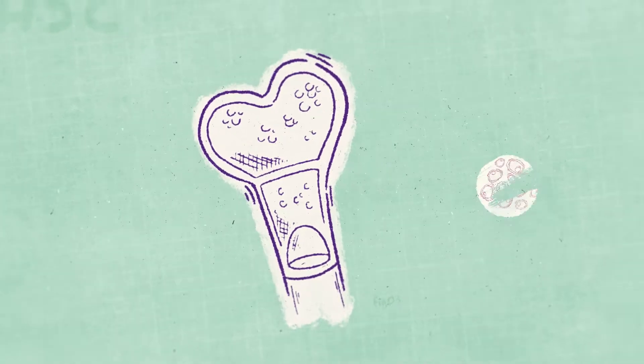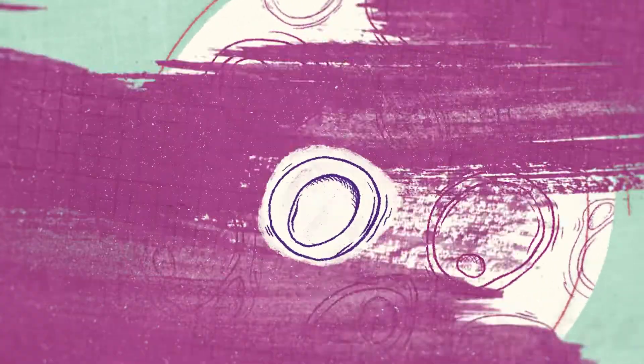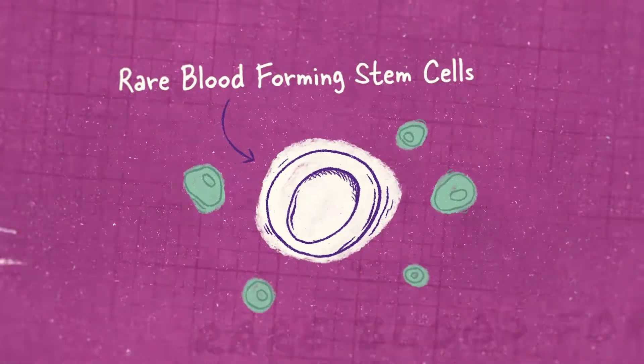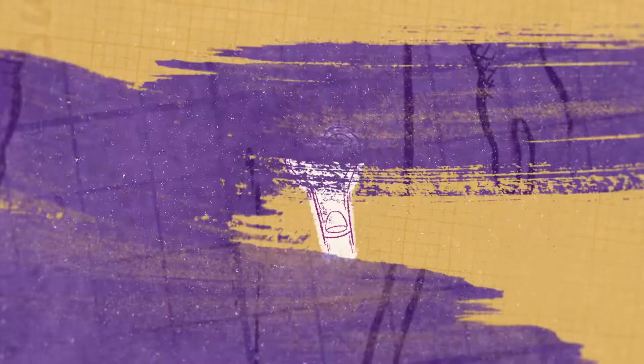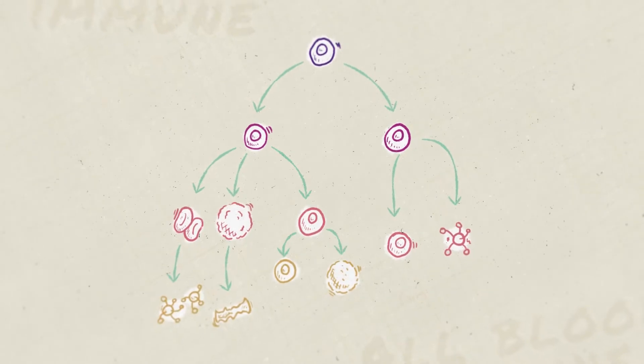Hematopoietic stem cells, or HSCs, are rare blood-forming stem cells within the bone marrow that give rise to your entire blood and immune system. HSCs generate all blood and immune cells.